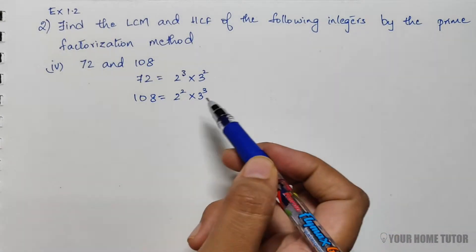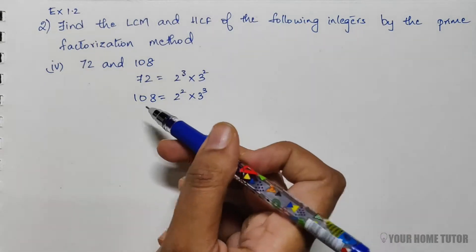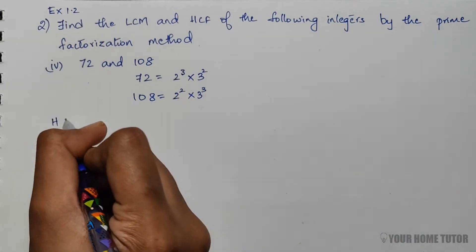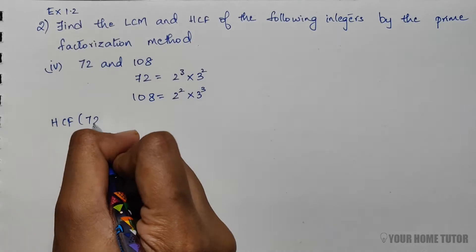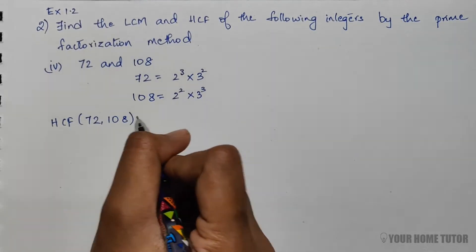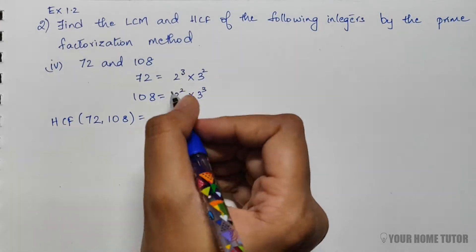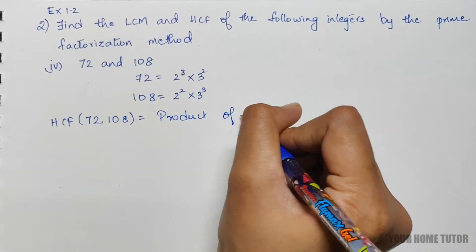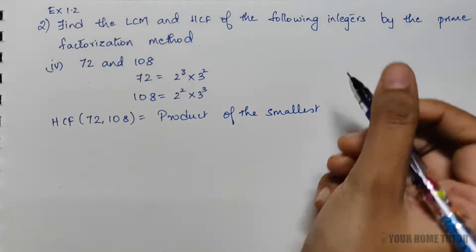HCF of 72 and 108 is the product of the smallest power of each of the prime factors of the numbers.